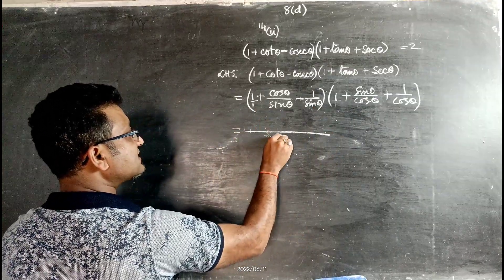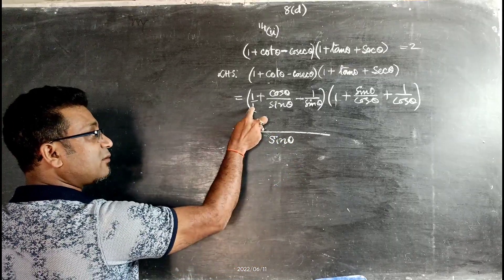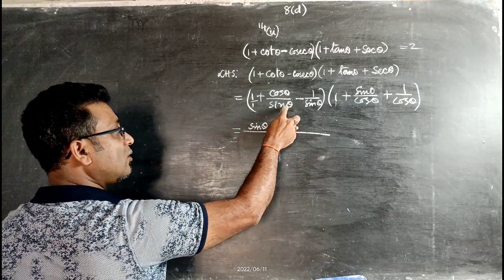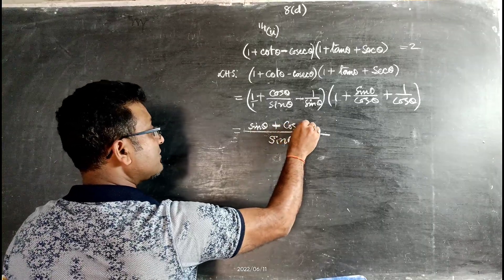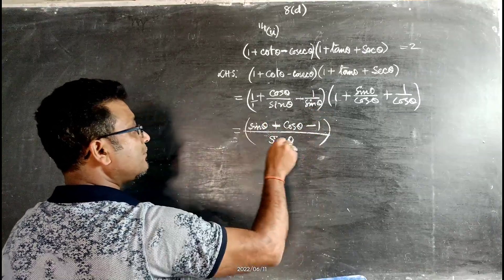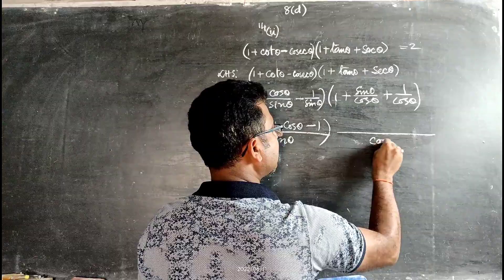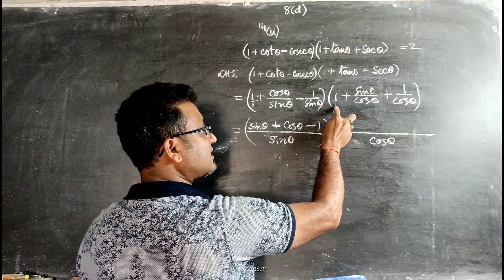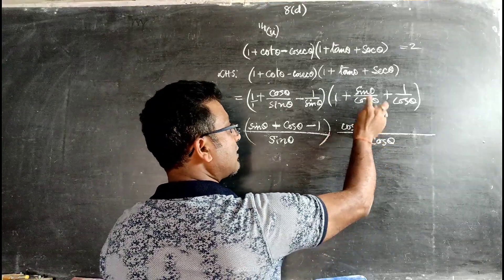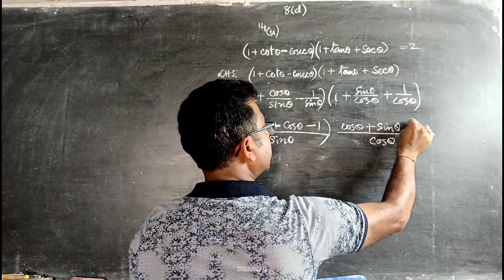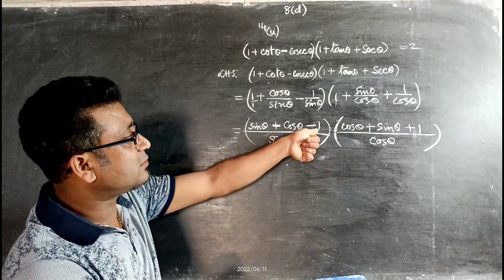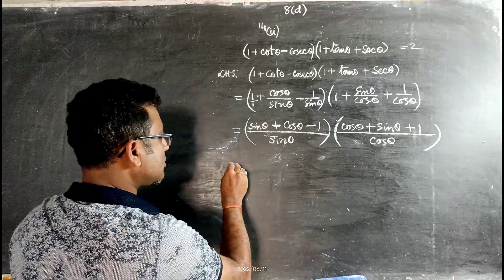After taking LCM, the first bracket becomes (sinθ + cosθ - 1)/sinθ and the second bracket becomes (cosθ + sinθ + 1)/cosθ. Multiplying these together gives (sinθ + cosθ - 1)(sinθ + cosθ + 1) divided by sinθ·cosθ.